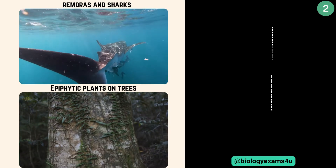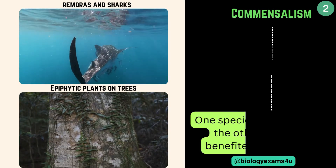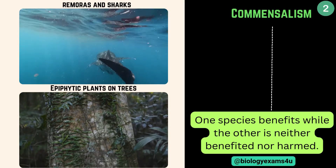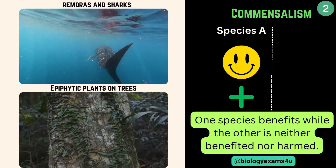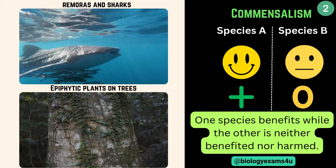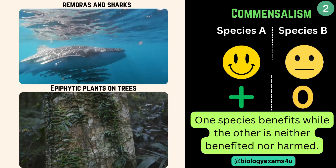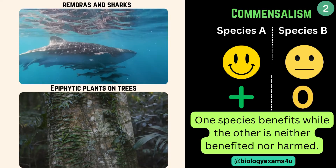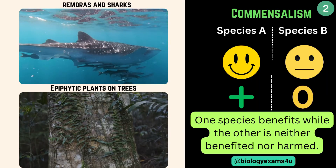This type of interaction is called commensalism. One species is benefited while the other is neither benefited nor harmed. So species A is benefited — plus sign for positive interaction — whereas species B is unaffected, so let's give zero. A type of interaction where one species benefits while the other is neither benefited nor harmed is called commensalism.